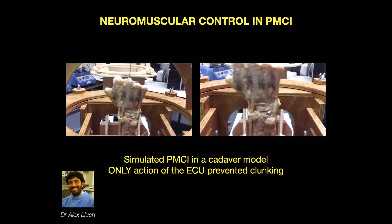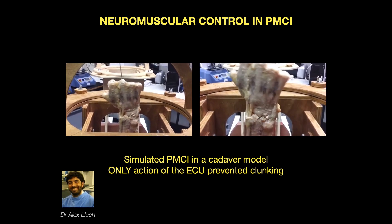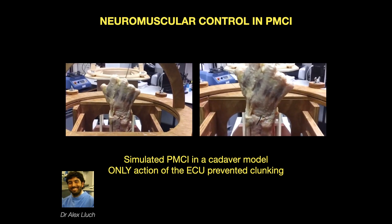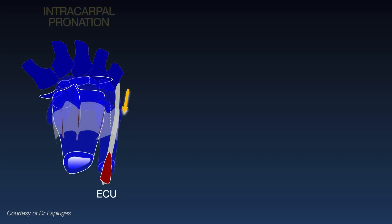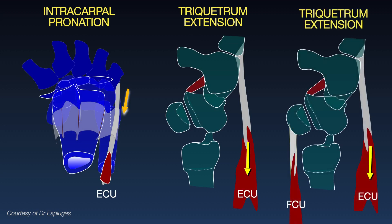In a simulated PMCI model in a cadaveric lab, Dr. Alex Jouk at the Institut Kaplan showed that the only muscle able to prevent clunking in mid-carpal instability was the ECU. The ECU causes an intracarpal pronation and also an extension of the triquetrum. This extension may be further facilitated by FCU action, which causes pisiform compression onto the volar surface of the triquetrum. Together, the intracarpal pronation and triquetrum extension will stabilize the palmar mid-carpal instability.